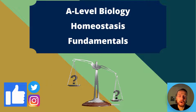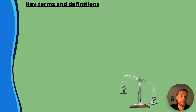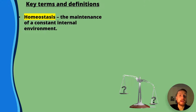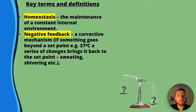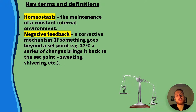Let's talk about the fundamentals of homeostasis — some key terms and definitions. First of all, homeostasis is the maintenance of a constant internal environment; it's all about keeping things balanced. Negative feedback is a corrective mechanism where if something goes beyond a set point — for example, your body temperature should be 37 degrees — a sequence of changes will bring it back to the set point. If we get too hot we sweat; too cold, we shiver.